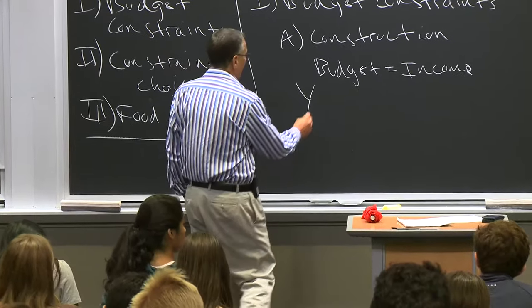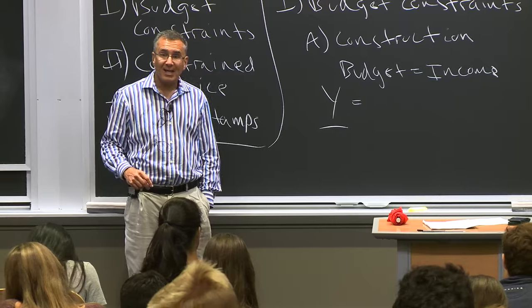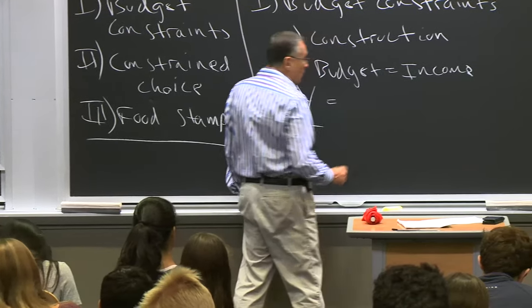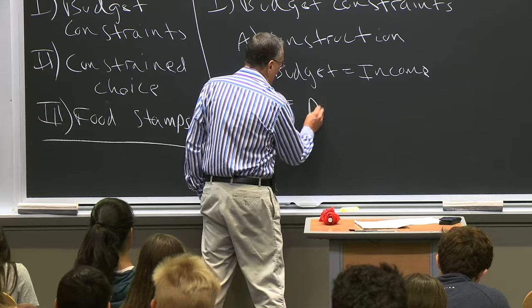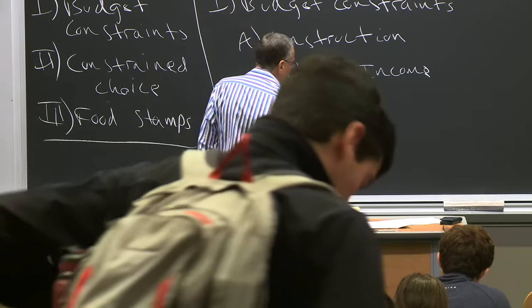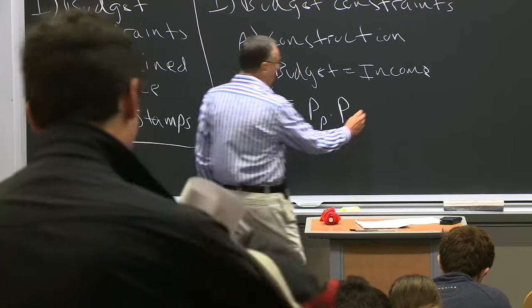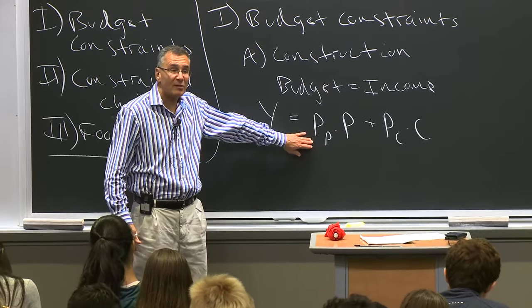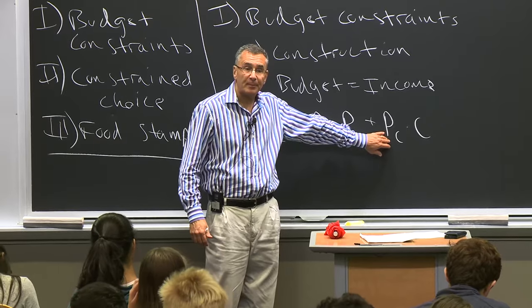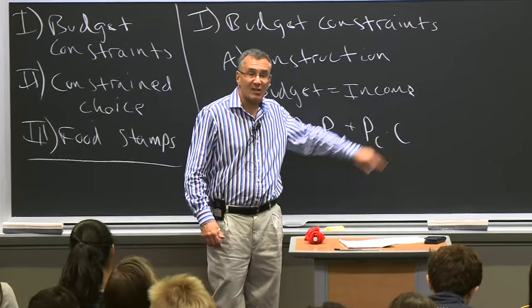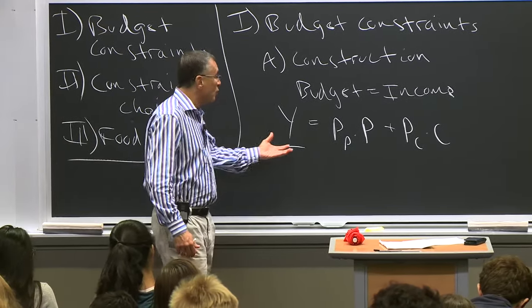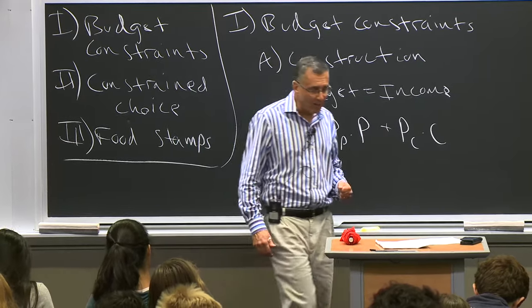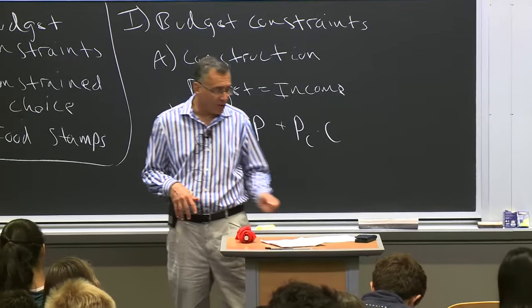We write the budget constraint as: your income Y can be spent on pizza or cookies. The constraint is that Y equals P_P times P (price per slice times number of slices) plus P_C times C (price per cookie times number of cookies). So P_P is the price per slice of pizza, P_C is the price per cookie, P is the number of pizzas, and C is the number of cookies.